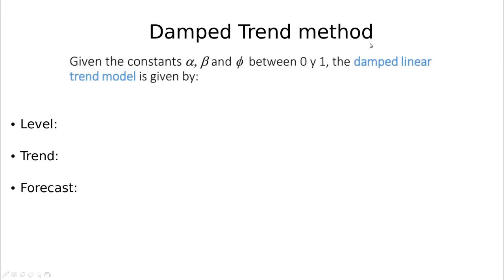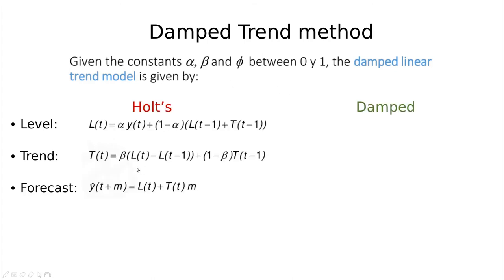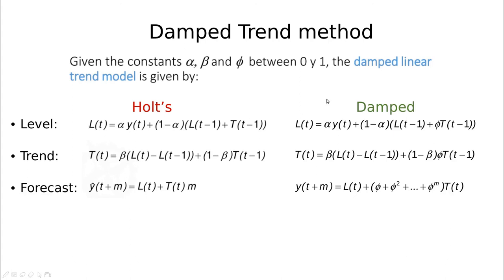An alternative to Holt's method is called the damped linear trend method. The idea is simple: take Holt's method, which uses an exponential average for the slope and an exponential average for the level, and add a dampening correction. We introduce a coefficient phi, also lower than one, so we don't use the trend straightforwardly — we smooth out the impact of the trend. If you project many steps into the future, the effect of the learned trend dilutes progressively.